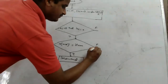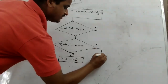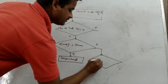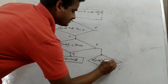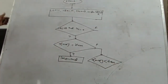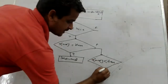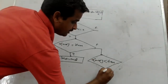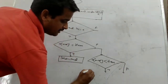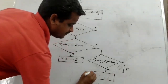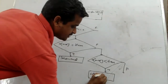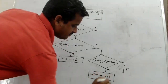और जब condition false होगी, तो उस case में फिर से condition है: क्या item बड़ा है array of mid से? तो फिर से 2 case हैं — true and false। अगर यह condition true है, तो आपका lower bound update हो जाएगा और हो जाएगा mid plus one।